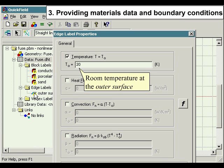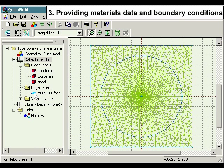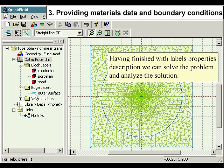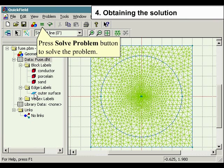Specify the room temperature at the outer surface. Having finished with the labels properties description, we can solve the problem and analyze the solution. Press Solve Problem button to solve the problem.